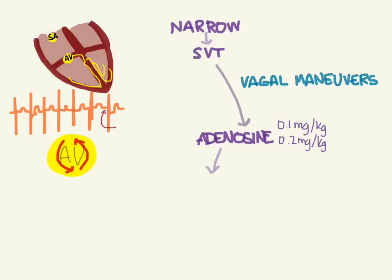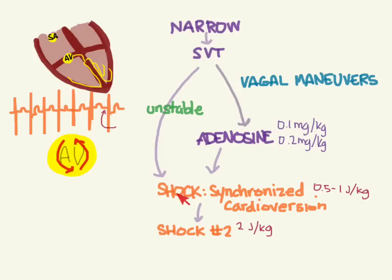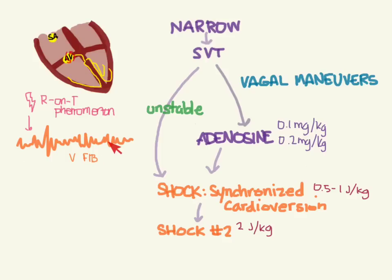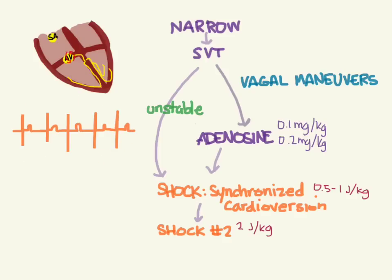If adenosine doesn't work, or if the patient was unstable to start with, perform synchronized cardioversion. The first shock is 0.5 to 1 joule per kilogram; if that doesn't work, the second is 2 joules per kilogram. Remember this is painful, so try to sedate the child beforehand. Unlike pulseless arrest where you defibrillate, here we use synchronized cardioversion — delivering the shock on an R wave — because delivering a shock on a T wave could precipitate ventricular fibrillation.